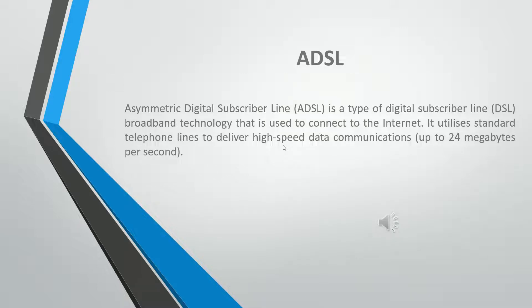ADSL — Asymmetric Digital Subscriber Line — is a type of digital subscriber line broadband technology that is used to connect to the internet. It utilizes standard telephone lines to deliver high-speed data communications, up to 24 megabytes per second.